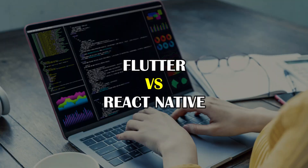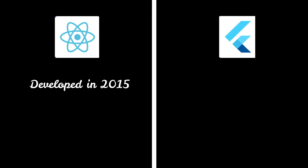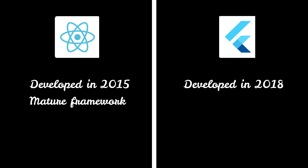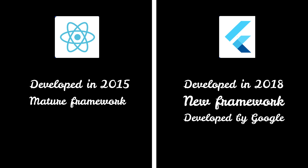Let's see the main difference between Flutter and React Native. React Native entered the market back in 2015 — it is the mature and older framework that has covered a lot of the market and gained popularity over the years. Flutter entered the market later in 2018, and is a comparatively new framework created and maintained by Google, whereas React Native is developed by Facebook.